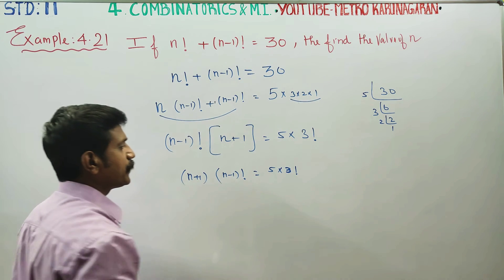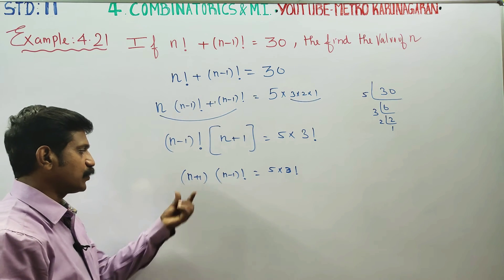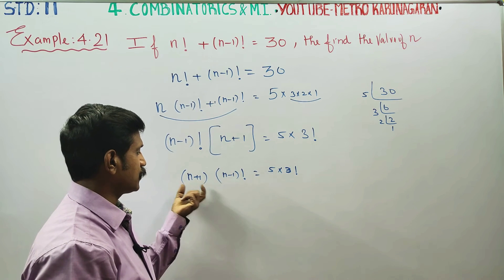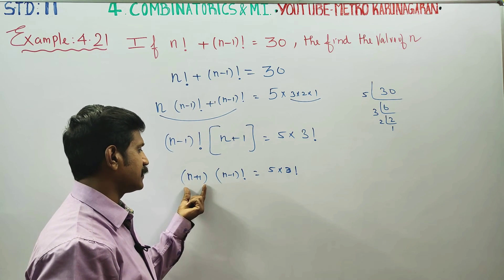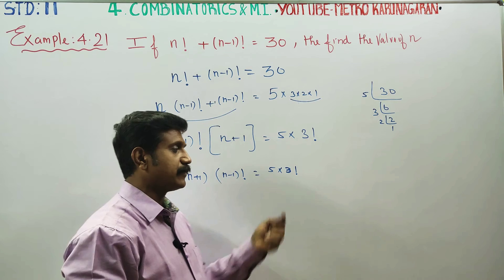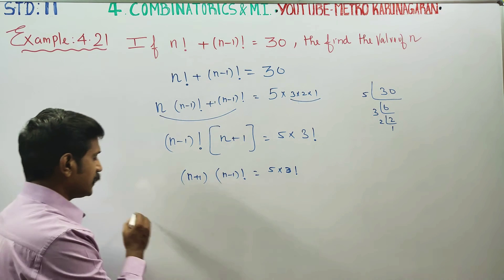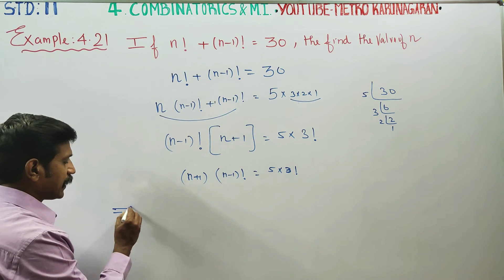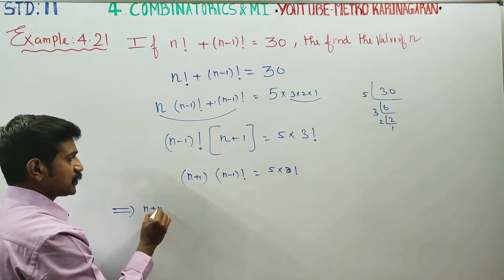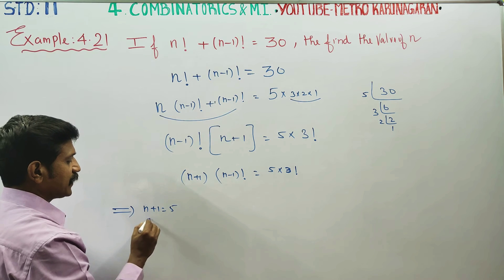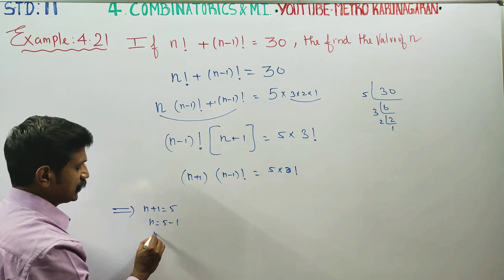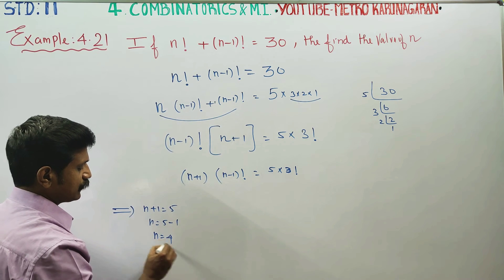Looking at the value of n factorial, we find that n plus 1 is equal to 5, so n is equal to 5 minus 1, which gives n is equal to 4.